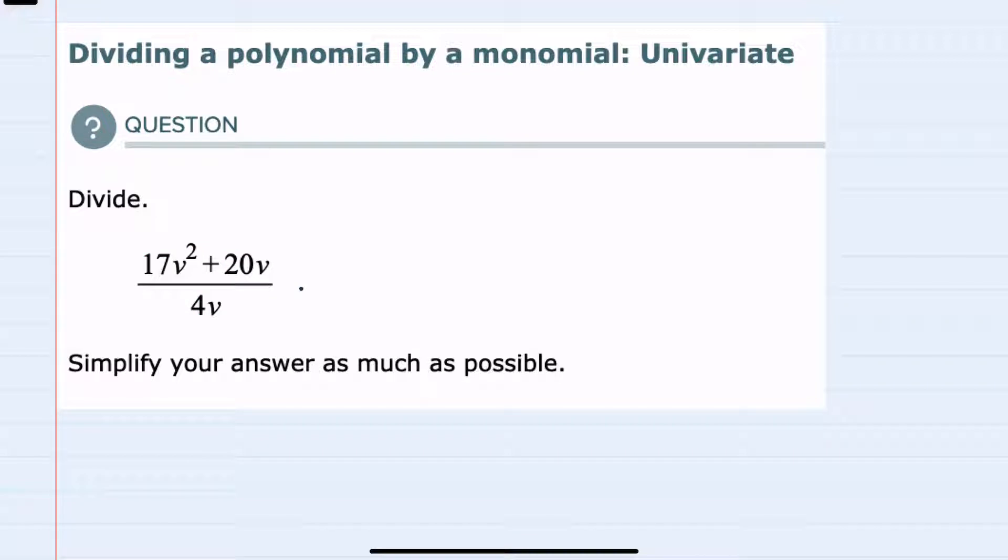So to simplify I'll start by separating the expression so that the first term in the numerator, the 17v squared, is over 4v plus the second term 20v is also over that denominator 4v.